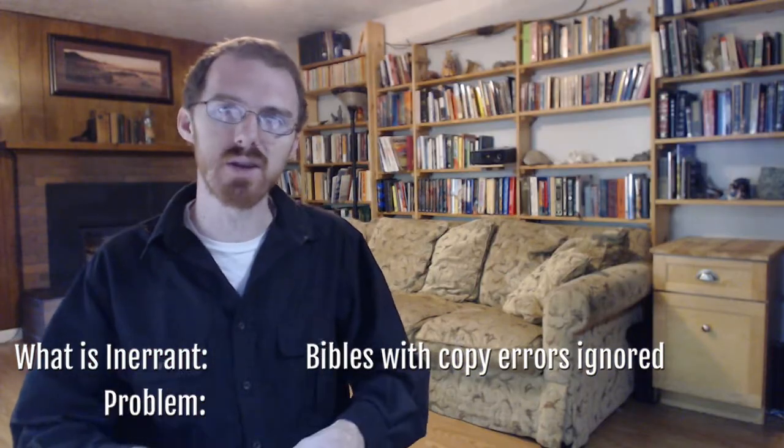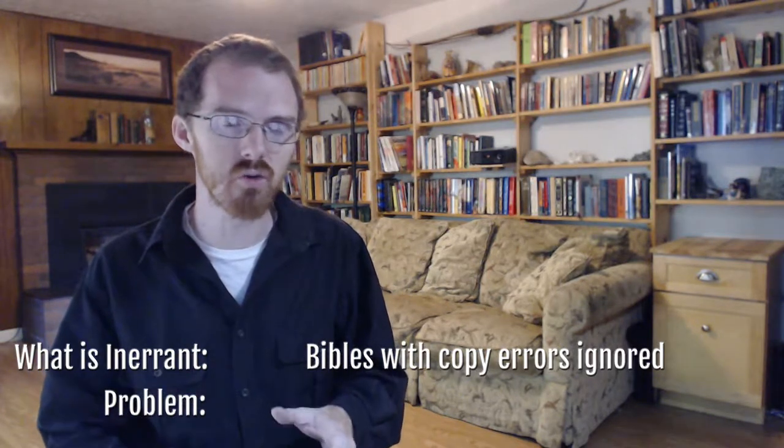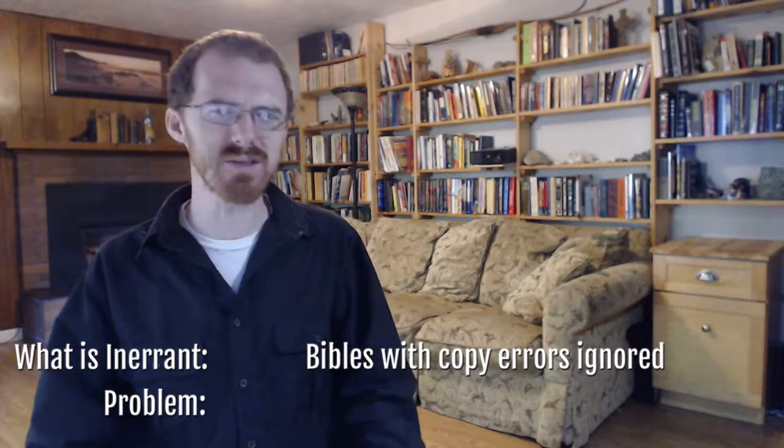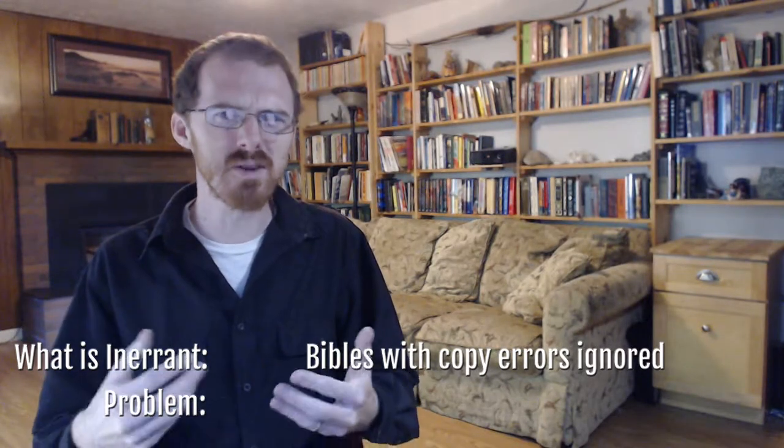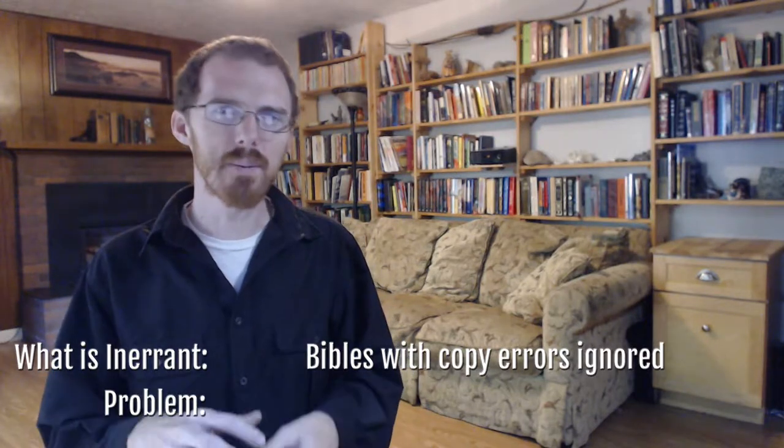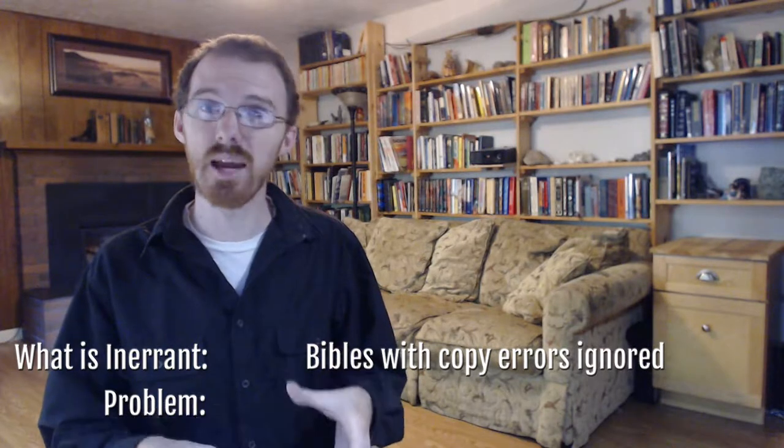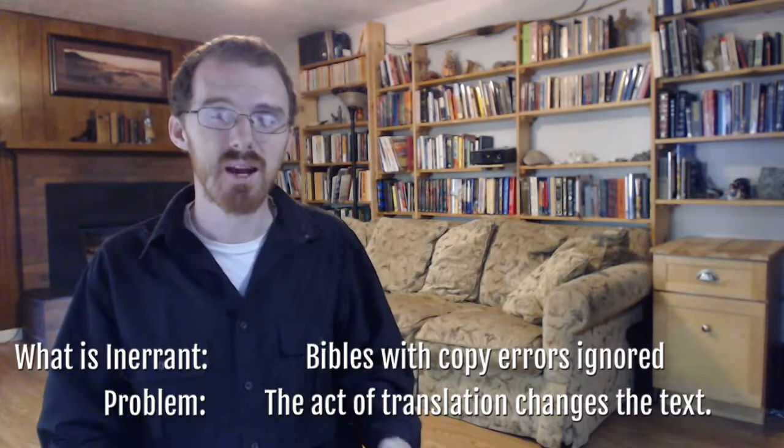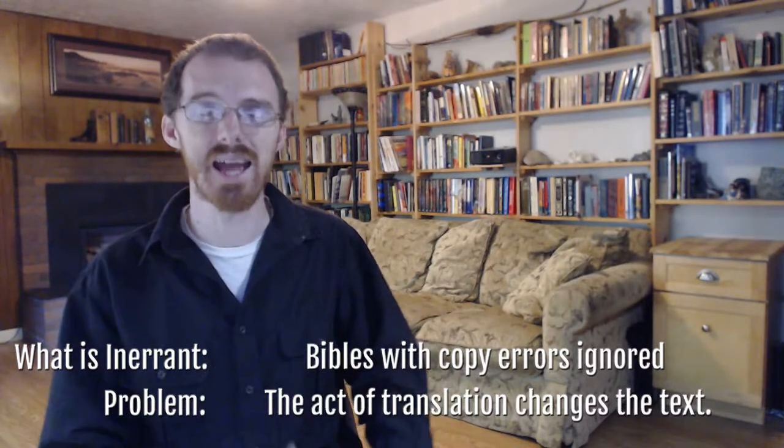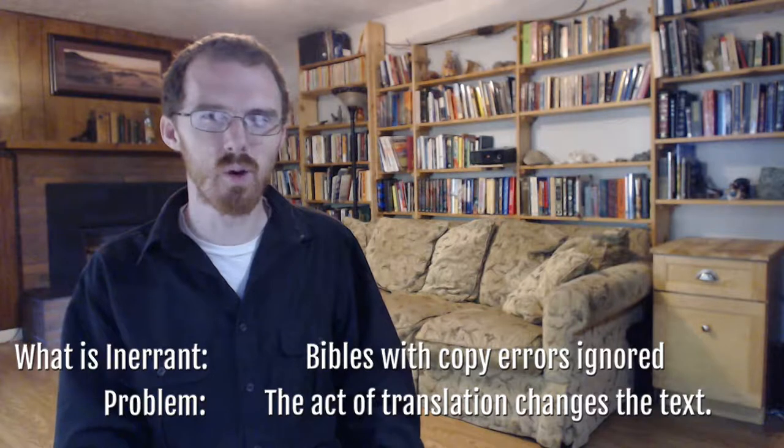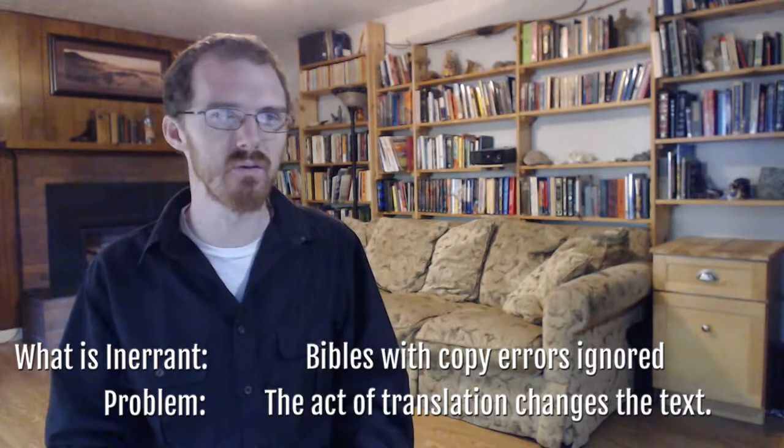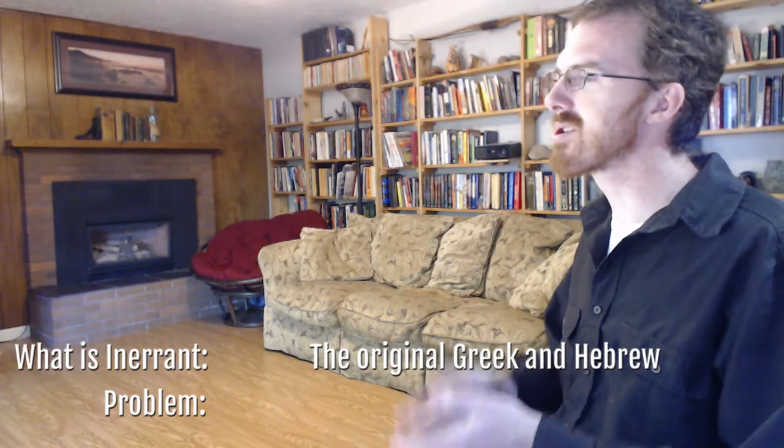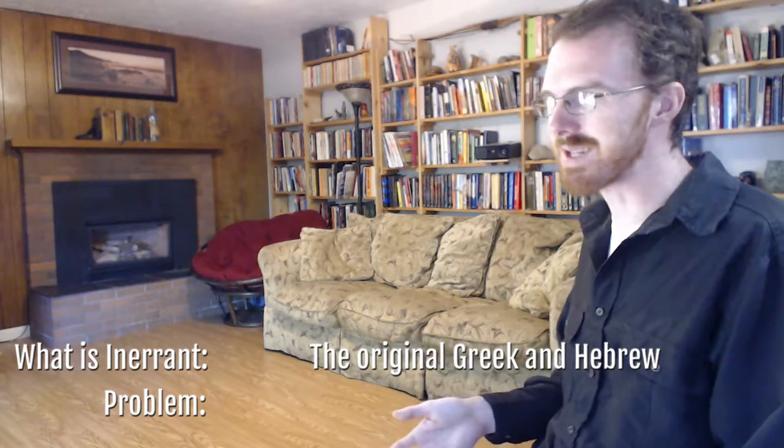That's true, but there are hundreds of English translations available today, and none of them fully agree. Is only one of them inerrant? And if there is one perfect version of the Bible, why is it in English? Why did God wait 1,300 years after Jesus to present the world with the perfect version? If you copy the Quran into English, it is no longer considered sacred writing, because they've recognized that the act of translating changes it somewhat. And they're right. Verbal inspiration cannot survive translation, because the act of translation changes something.